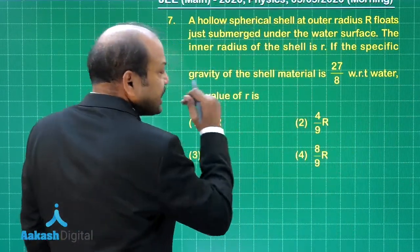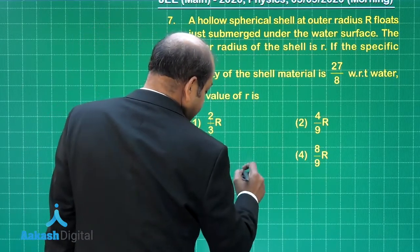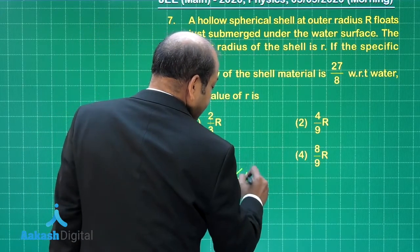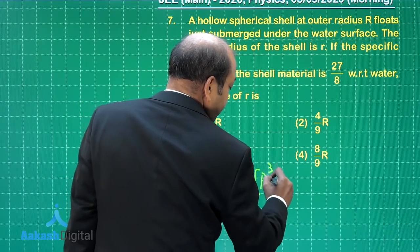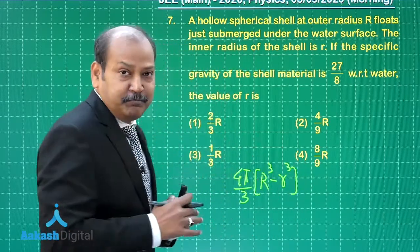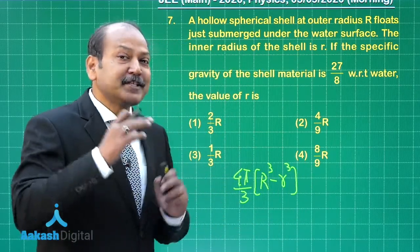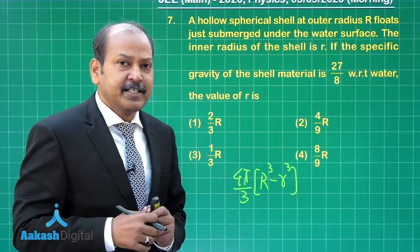What is the mass of the shell? Well, mass of the shell we can write it as 4π by 3 into capital R cube minus small r cube, that is the volume where the material of the shell is. There is air inside so we can neglect the weight of air inside.